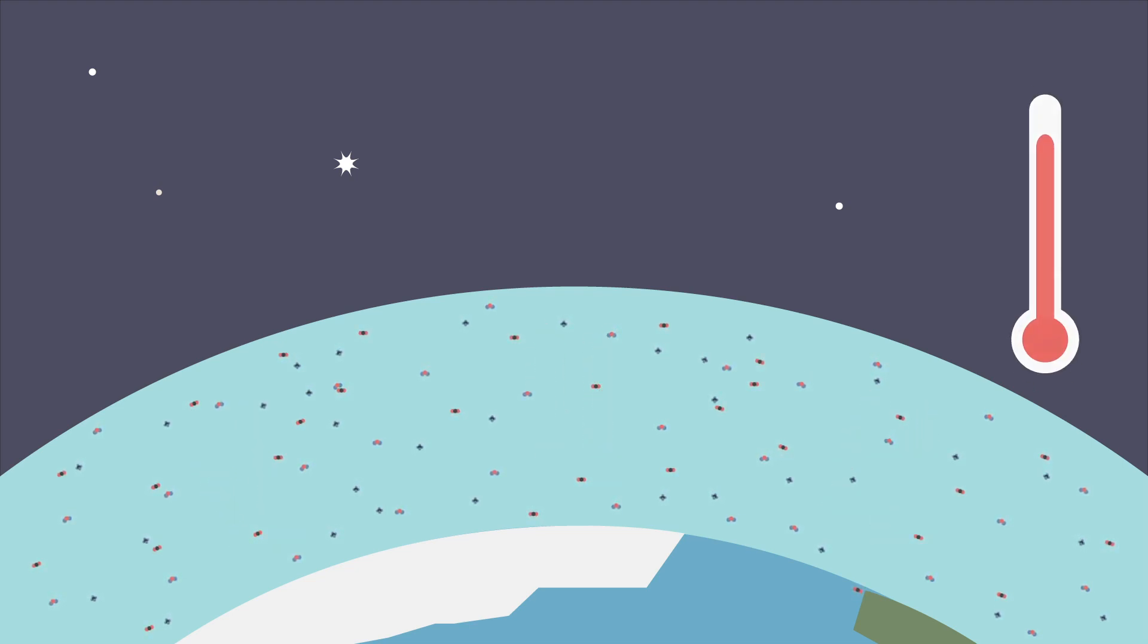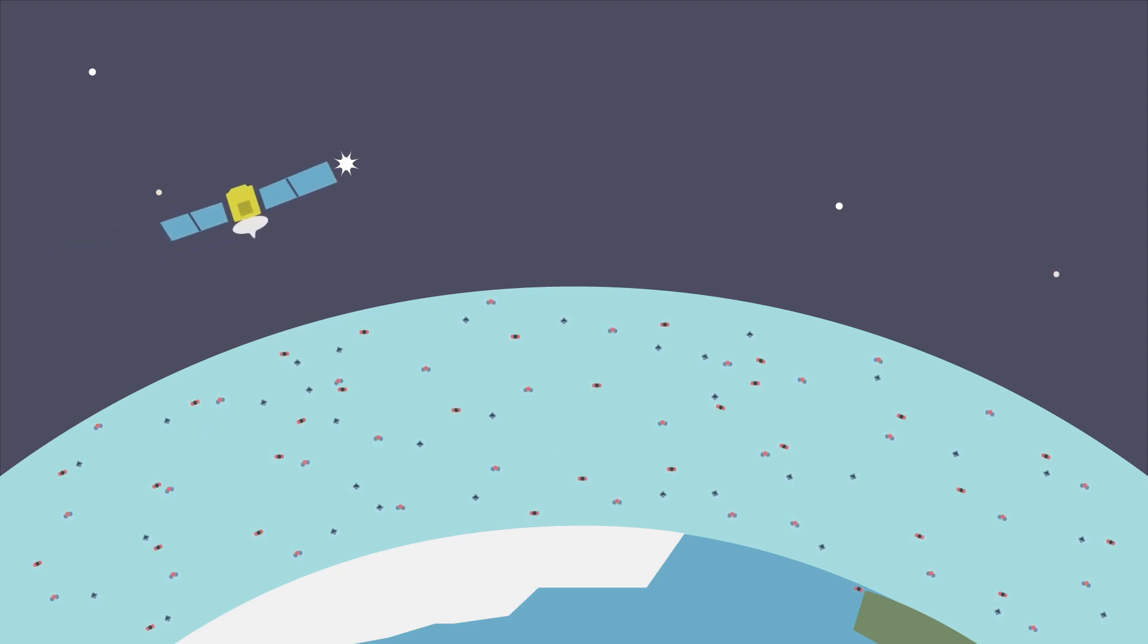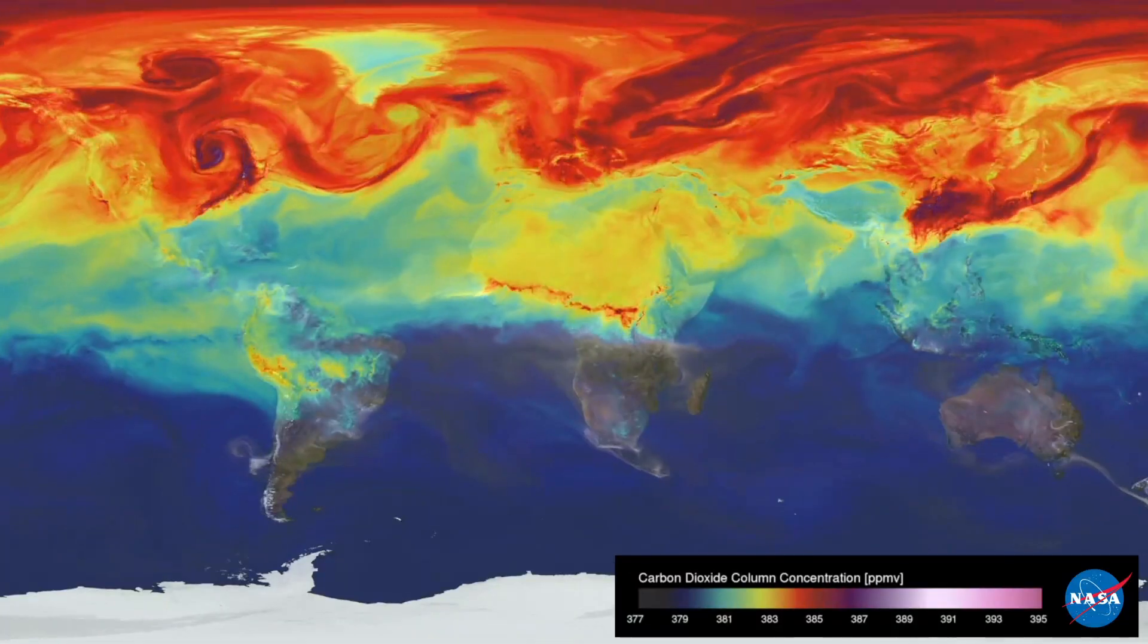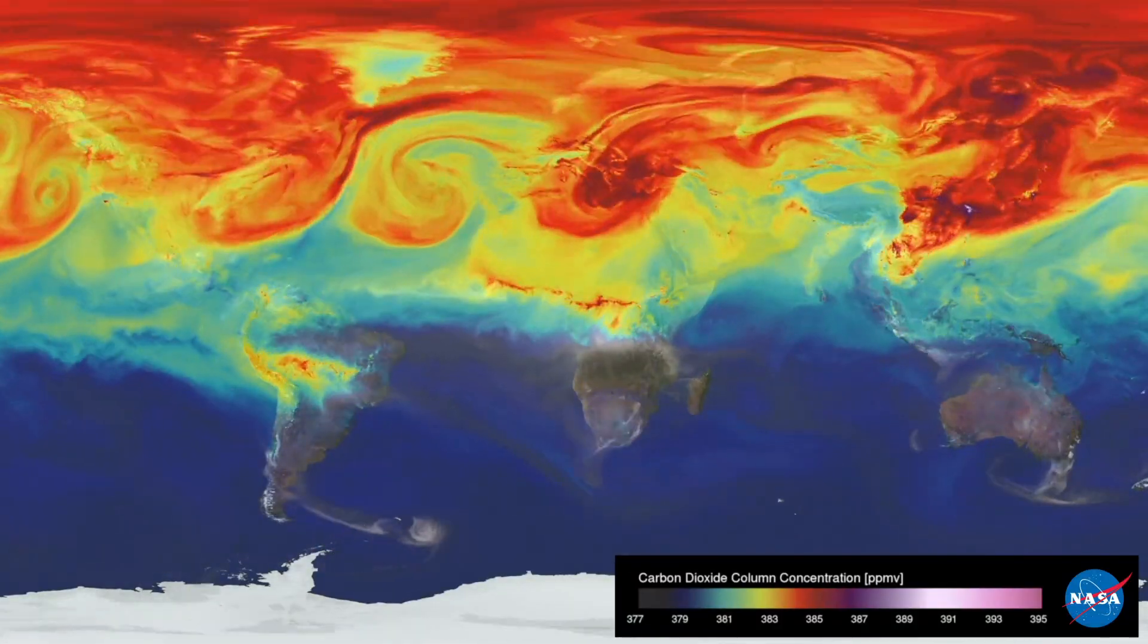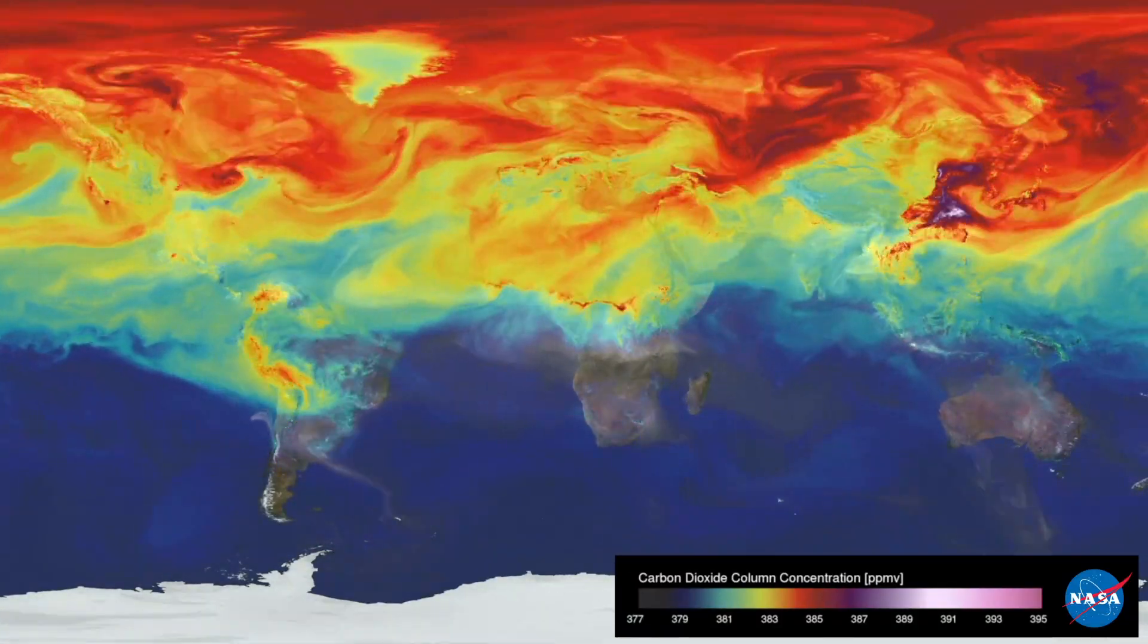NASA satellites are constantly measuring the gases in our atmosphere from space. They have observed increases in the amounts of carbon dioxide and other greenhouse gases.